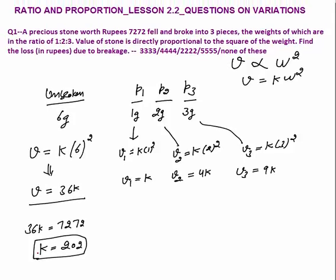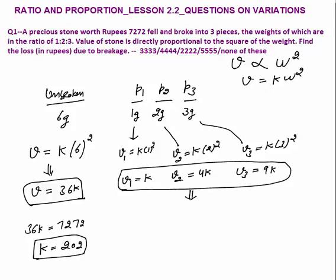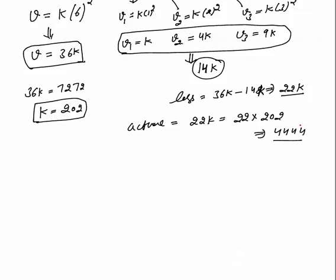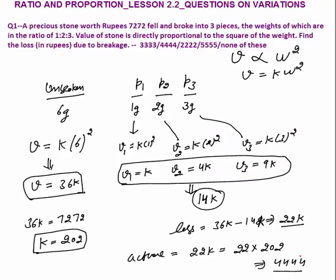Now we calculate the loss due to breakage. The unbroken stone's value was 36k. The combined value of all broken pieces is k + 4k + 9k = 14k. The loss equals 36k minus 14k = 22k. Since k = 202, the actual loss = 22 × 202 = 4444. That is the loss incurred when the stone breaks into three pieces.